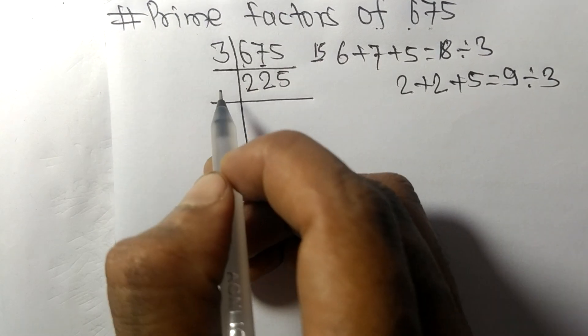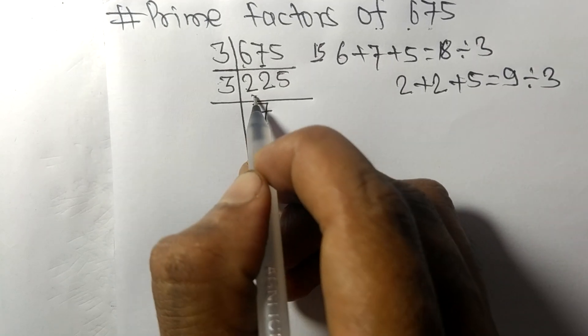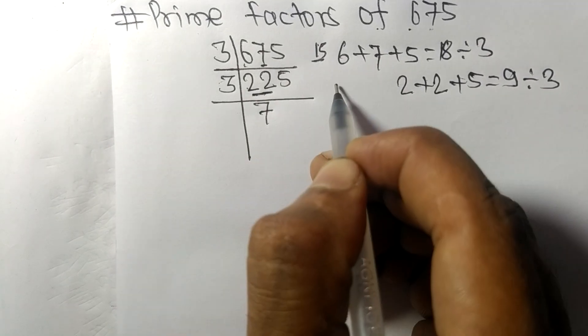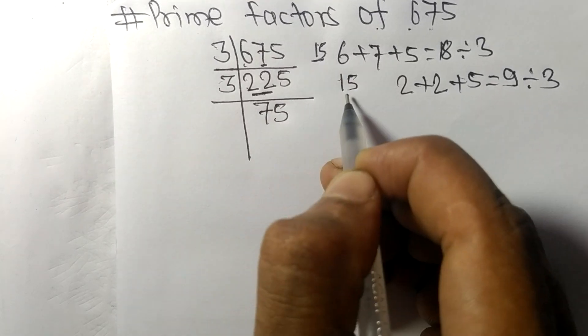3 times 7 is 21, remainder 1. This 5 makes 15. 3 times 5 is 15. We get 75.